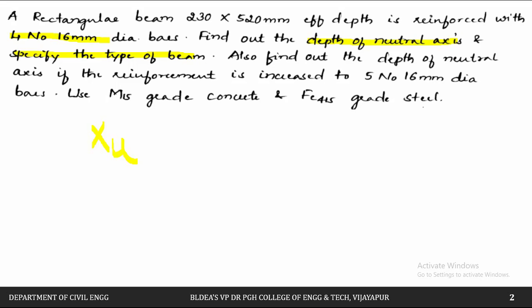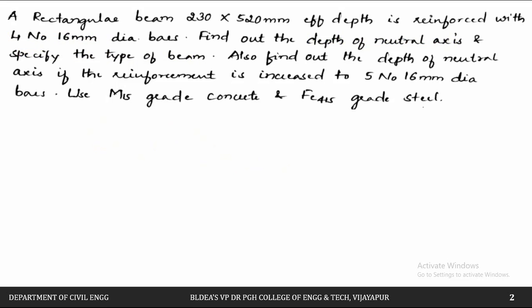How do we calculate this? We have to check with XU max. If XU is less than XU max, that beam is called under-reinforced. If XU is greater than XU max, then it is called an over-reinforced section.